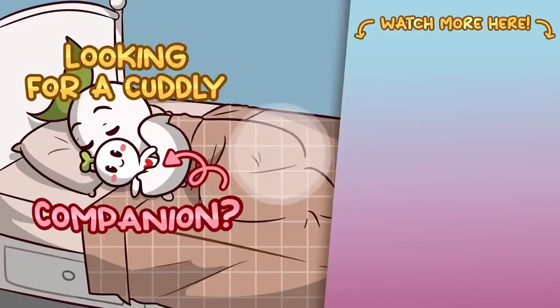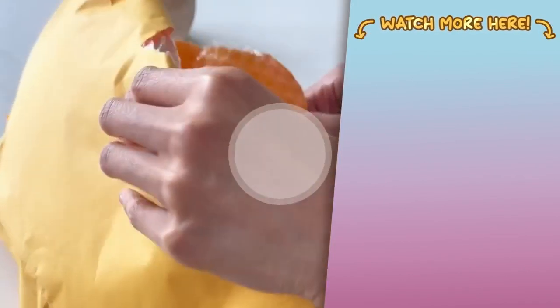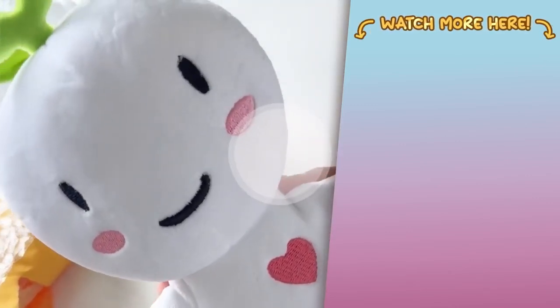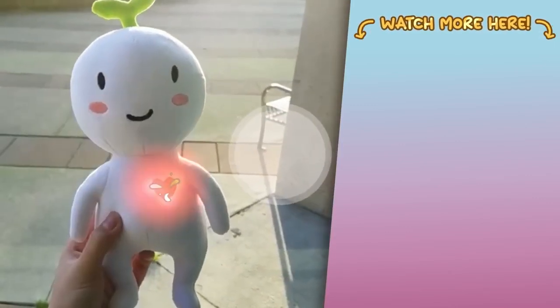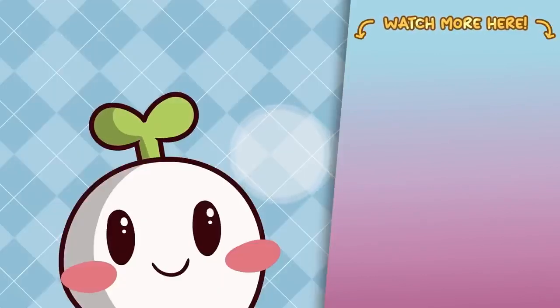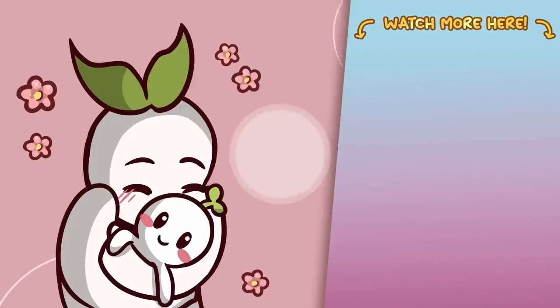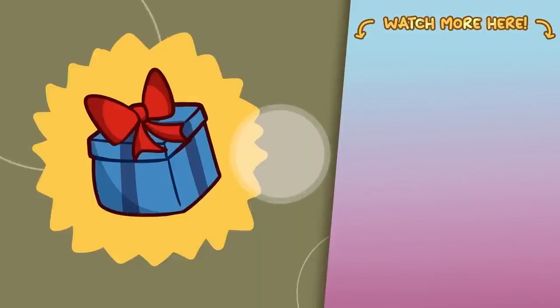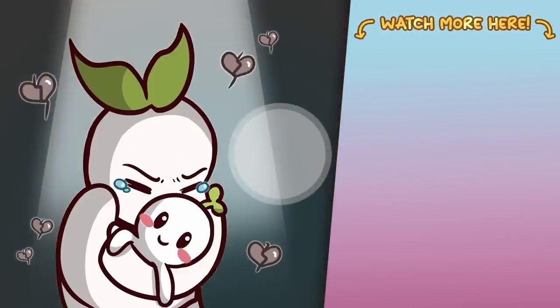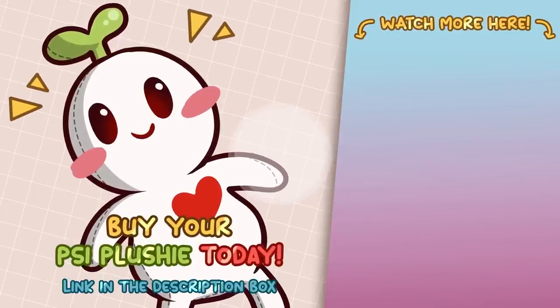Are you looking for a cuddly companion that brings positivity and mental wellness to your daily life? Get your very own Psy. The lovable plushie is here to brighten your days. It embodies the spirit of Psych2Go, and it serves as a reminder to prioritize your mental well-being. Its green leaf symbolizes growth, renewal, and the importance of self-care. Whether it's for yourself or as a thoughtful gift for a loved one, Psy is ready to be your snuggly friend through all of life's ups and downs. Buy your Psy plushie today. Link is listed in the description box.